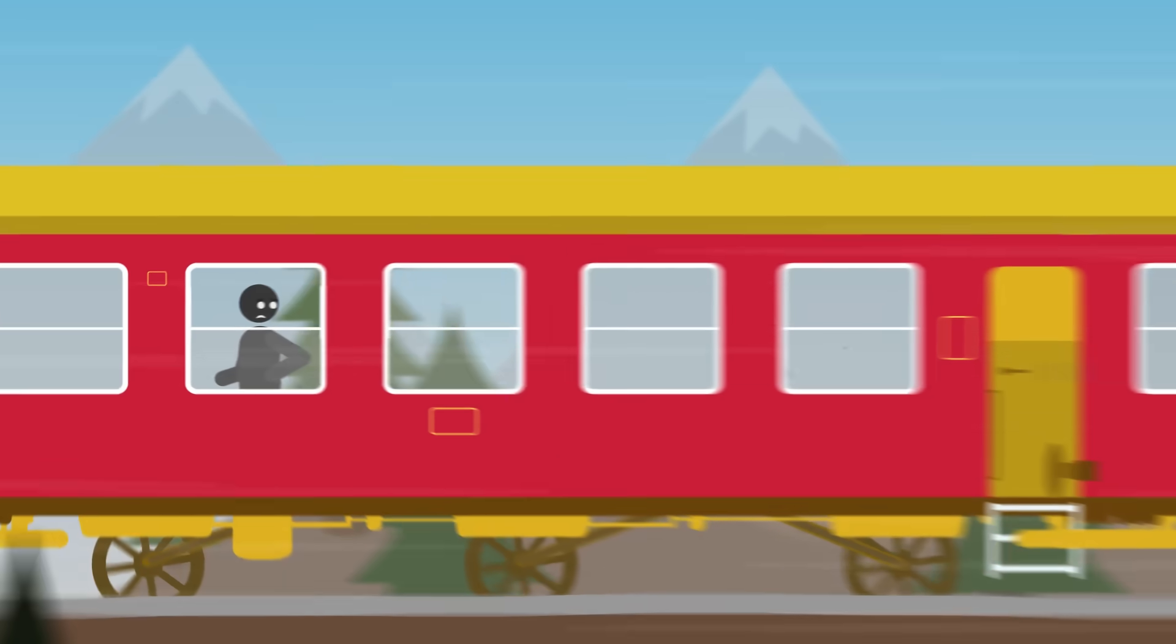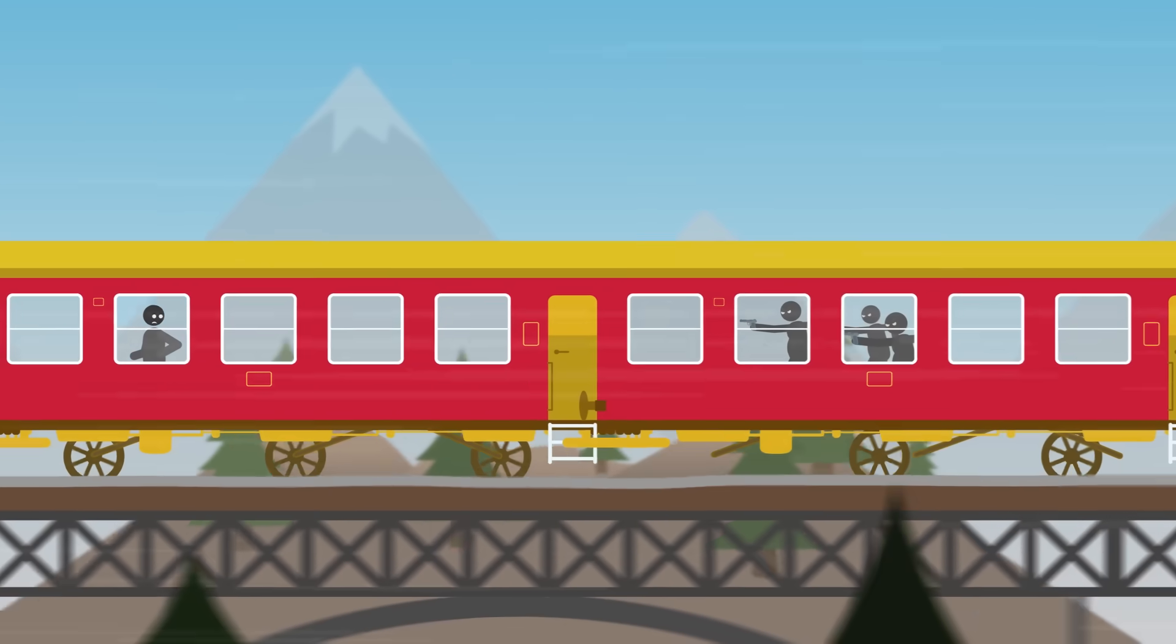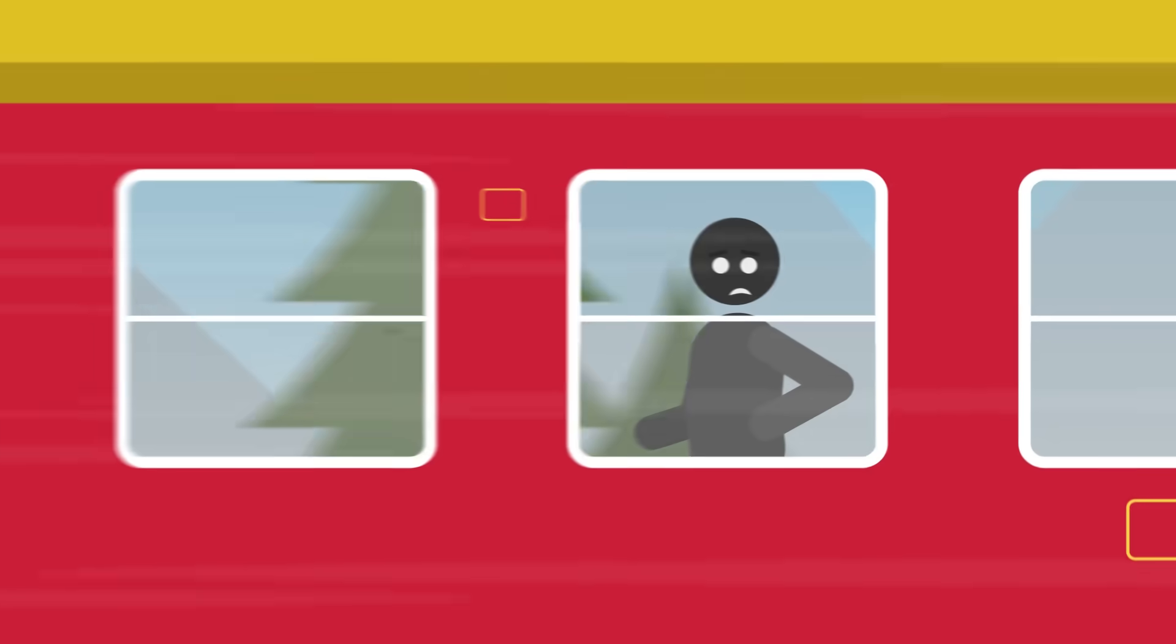You're speeding along a track at 90 miles per hour while being chased by those vindictive villains again. And now they have you cornered. What do you do?